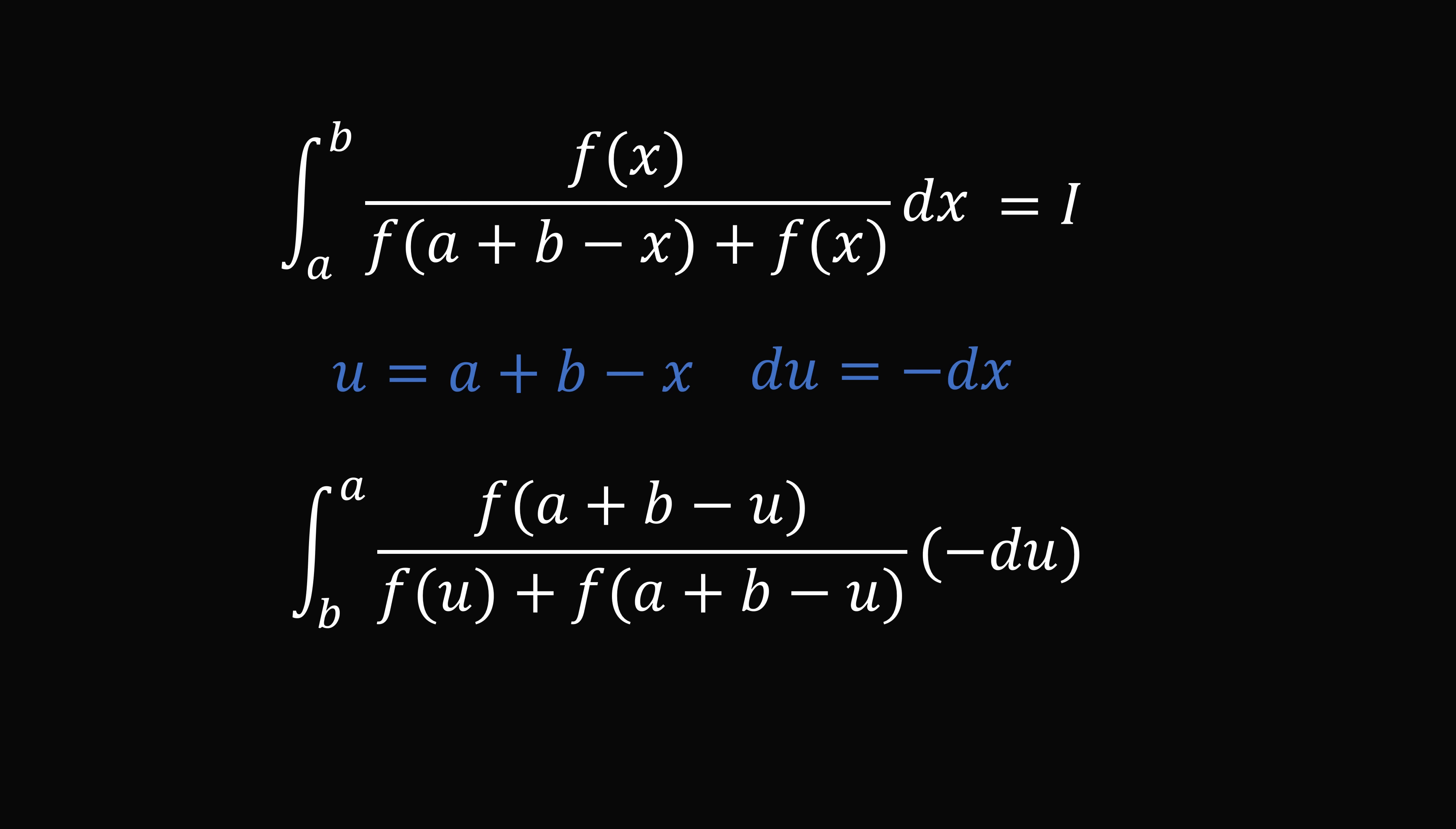So we end up with the integral from b to a of f(a + b - u) divided by f(u) + f(a + b - u) negative du. Now this integral is also equal to I. Now we can flip the limits of integration and cancel it out with this negative du. So we end up with the integral from a to b and we have a du.